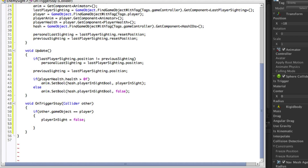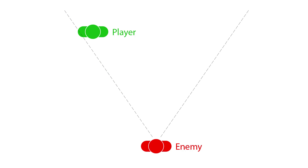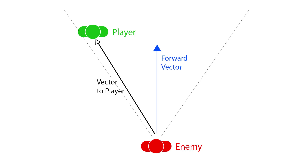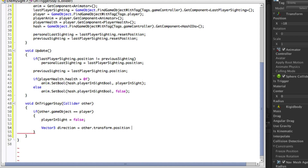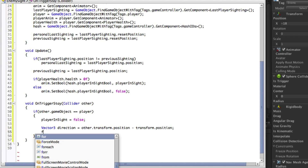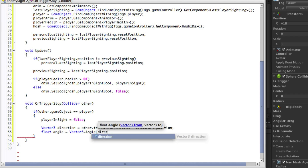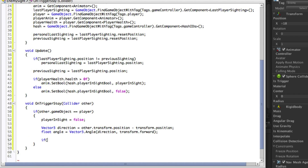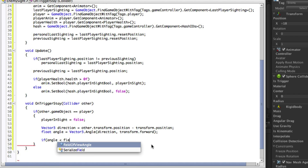To determine whether the player is within the field of view we are going to use a function of the Vector3 class called Angle. This takes in two Vector3s and returns the angle between them. We will pass in a vector from the enemy to the player and the enemy's forward vector. If this angle is less than half the field of view angle then the player is within the field of view. Now we can have the condition to check whether our angle is less than half of the field of view angle variable.